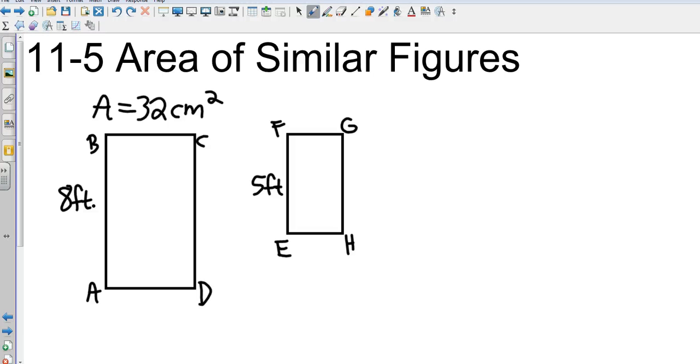Okay, geometry, 11-5, area of similar figures. So I've got rectangle ABCD and I've got rectangle EFGH. I've got the area of one, and then I have the sides of the other two.